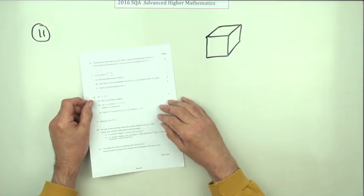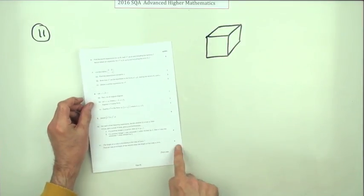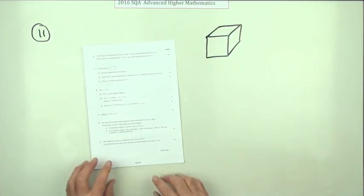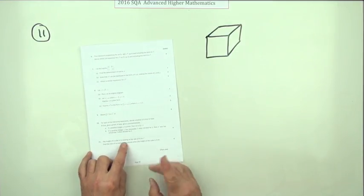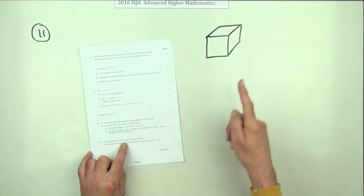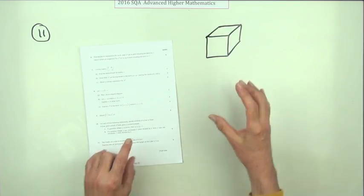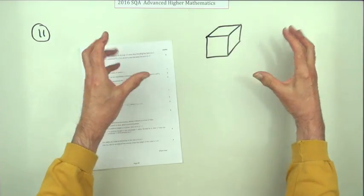Number 11 from the 2016 Advanced Higher Maths exam - a question on related rates of change. What does it say? The height of a cube is increasing. Now that can only mean the whole cube is expanding - it can't mean you've got a cube and its height increases because it would turn into a cuboid.